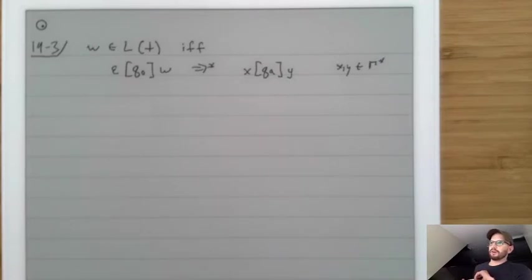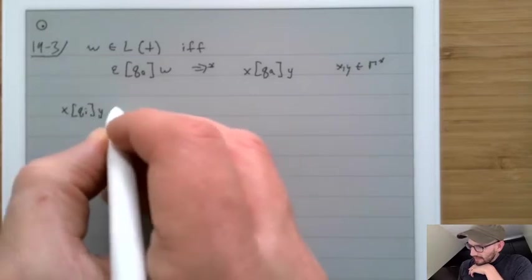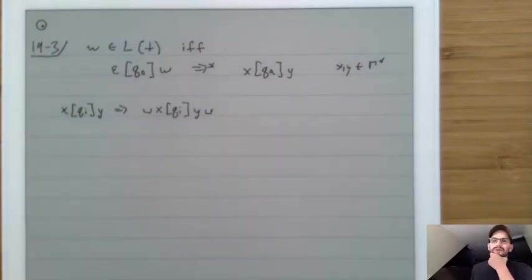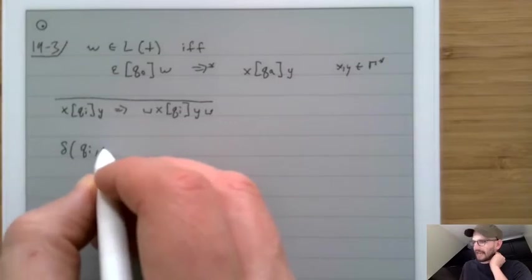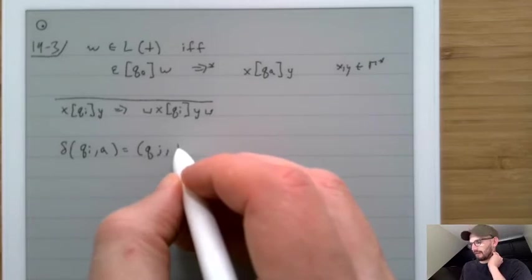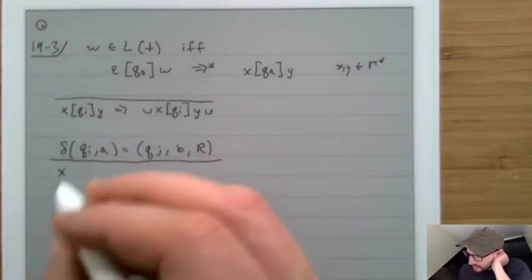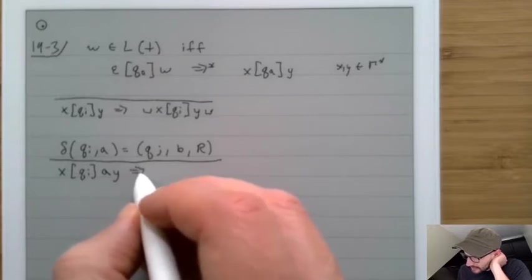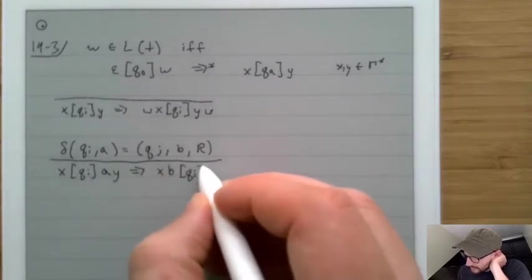Here are the rules for how to evolve the state. The first one says that x, q, i, y can go to blank, x, q, i, y, blank — at any time you want, you can add a blank at the left and the right. The next one says: if Delta of qi and a returns qj, b, and Right, that means we were in a configuration where x was behind us, we're in state qi, looking at an a, with y after that. Then we can go to x where we replace a with b and move right, now in state qj with y in front.